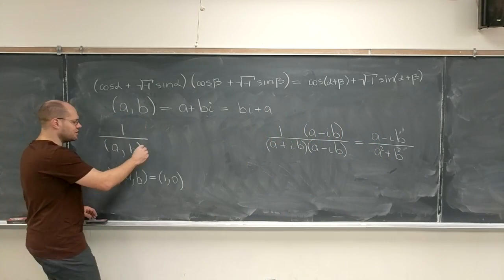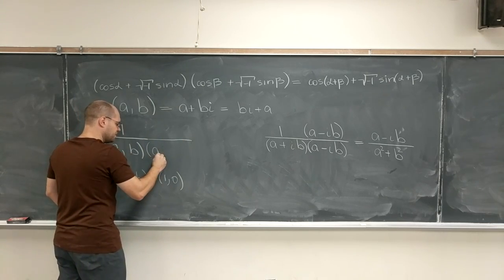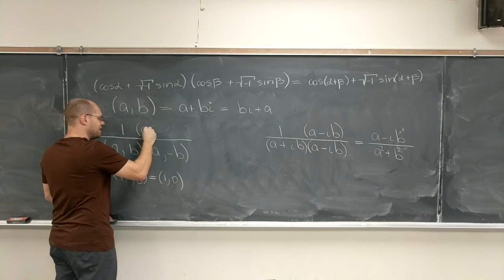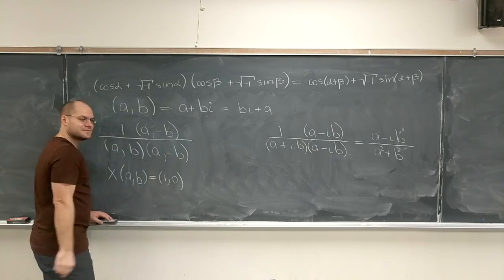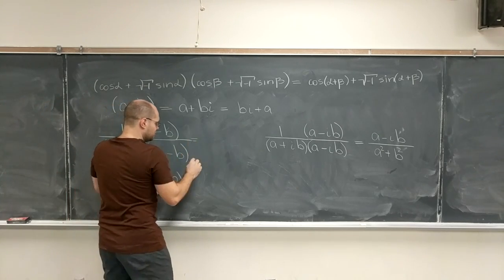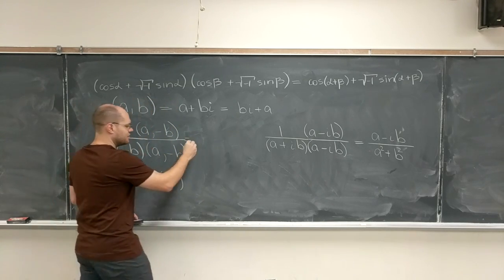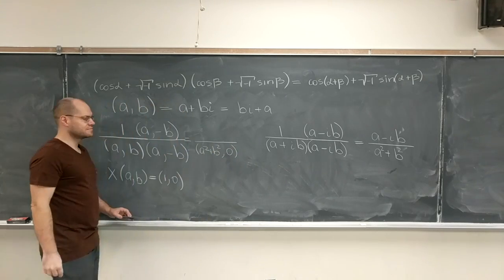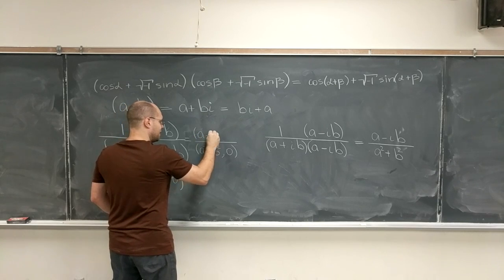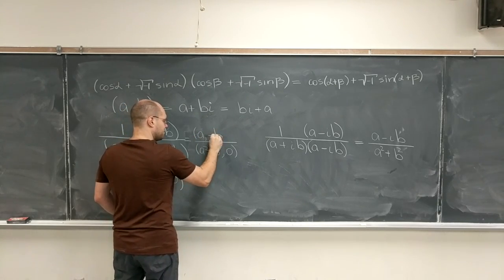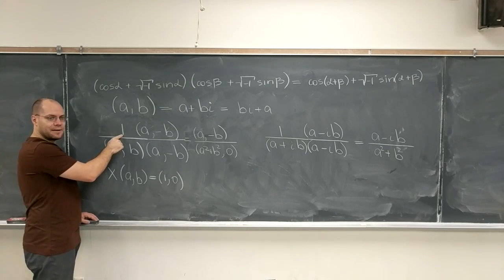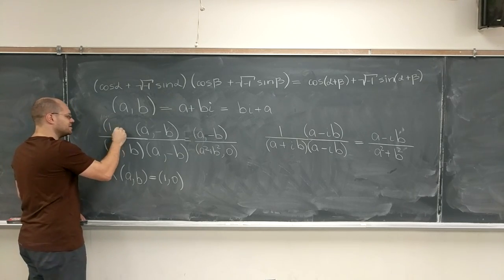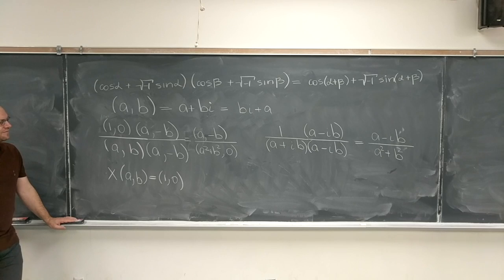Here, you cannot use any of that intuition. You just have to be brilliant to know to multiply both the top and the bottom by (a, -b). Okay, and then following the rules laid out by Hamilton, on the bottom we have (a² + b², 0). And on top we have (a, -b). And now you have to realize that from Hamilton's point of view, you shouldn't even write 1 divided by (a, b). Really write (1, 0) divided by (a, b).